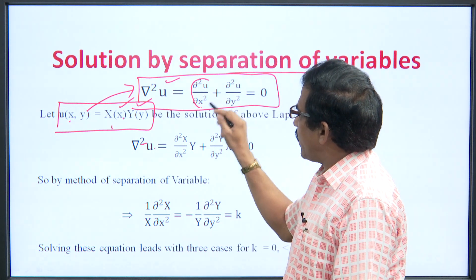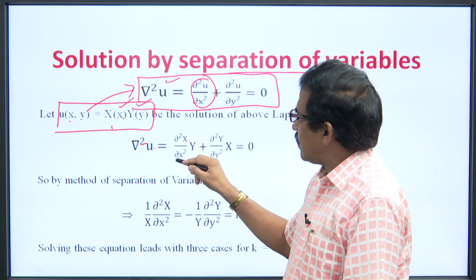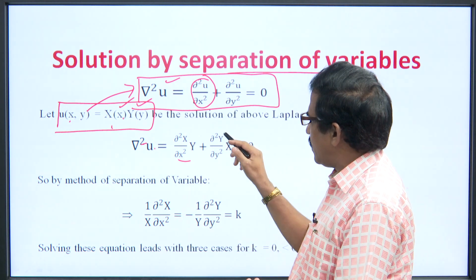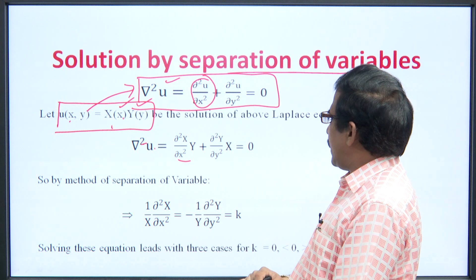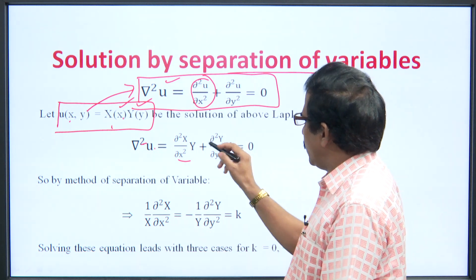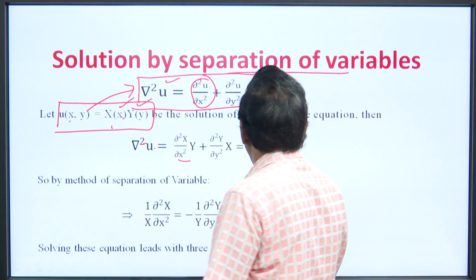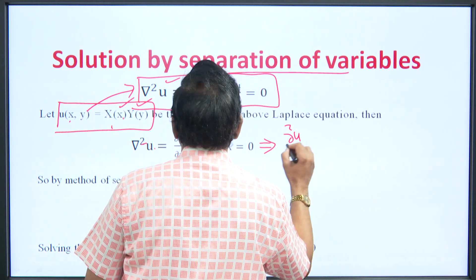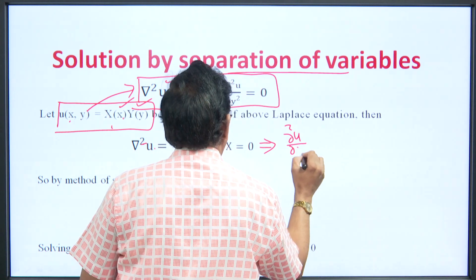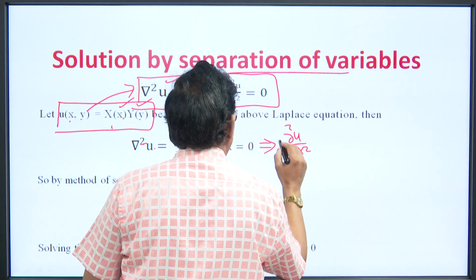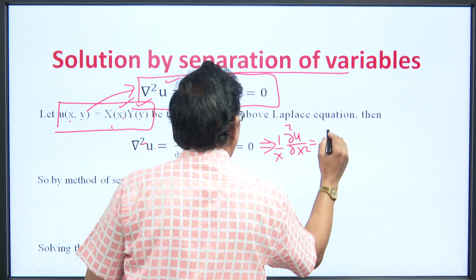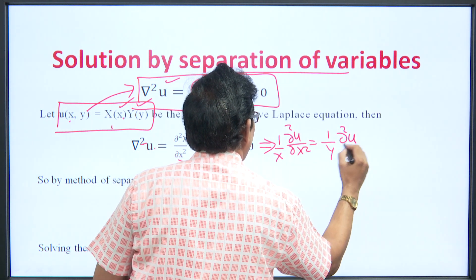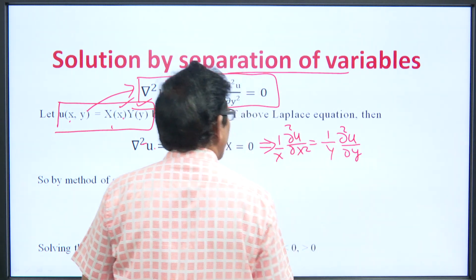So in the first term we get del²X/del x² times Y plus del²Y/del y² times X equals zero. Now separating variables: del²X/del x² divided by X equals negative (1/Y) del²Y/del y².